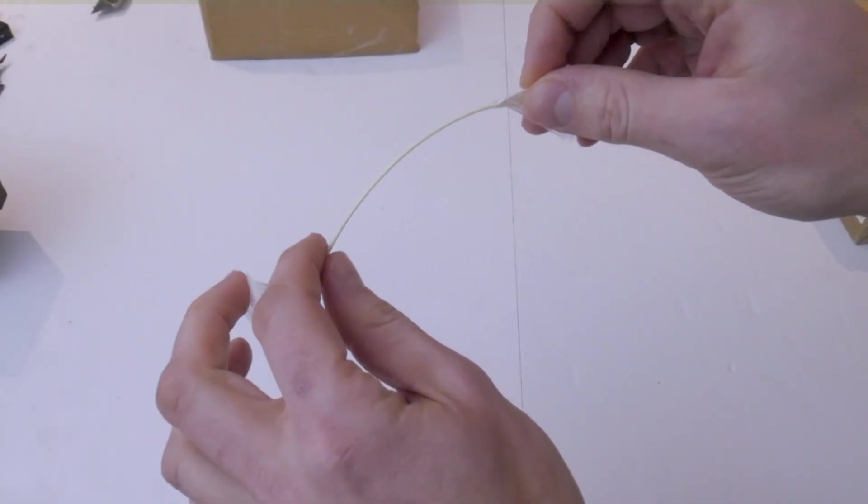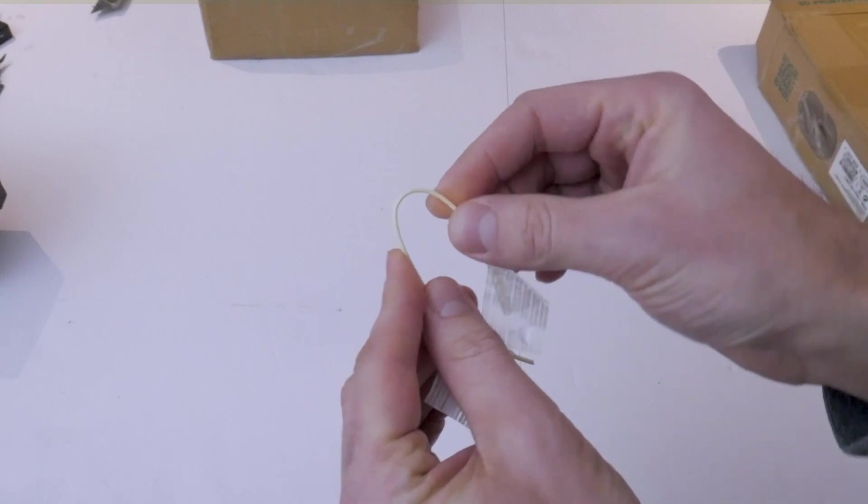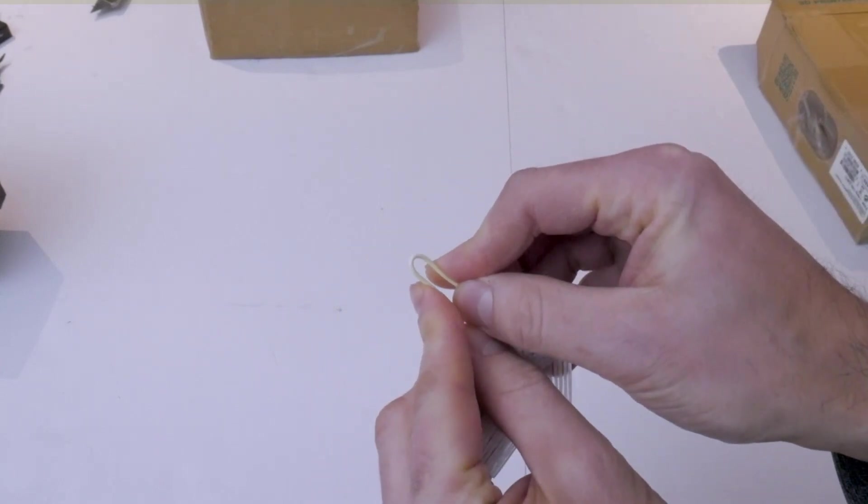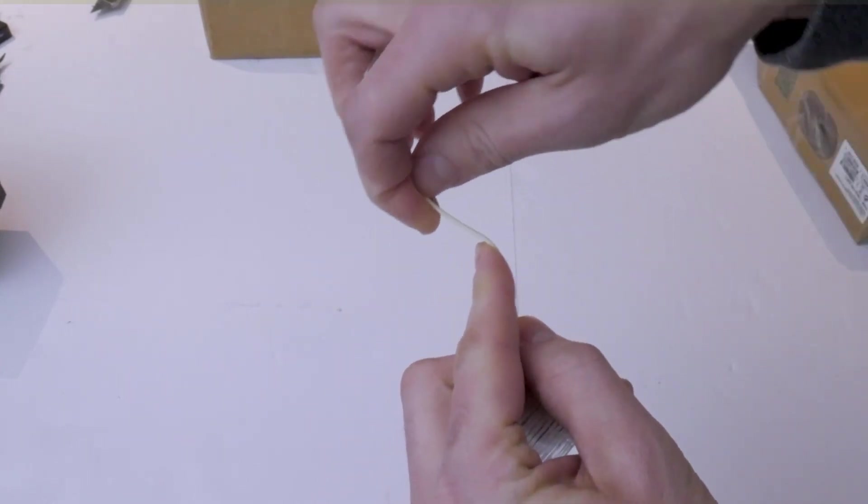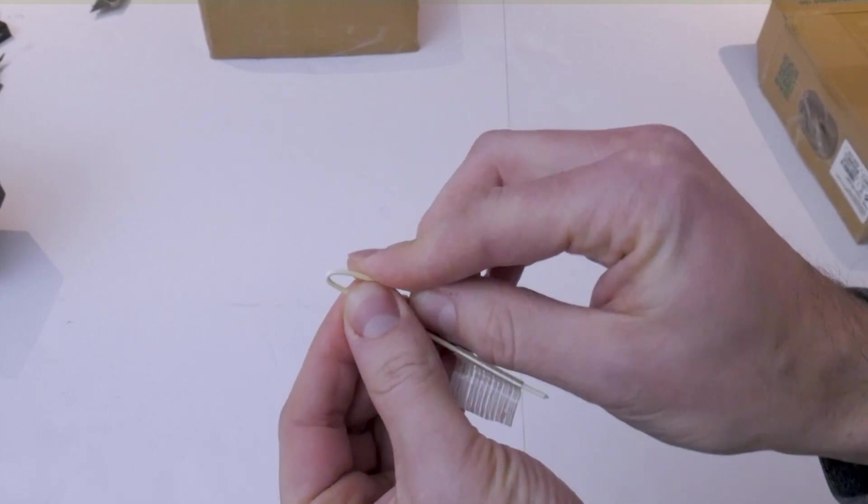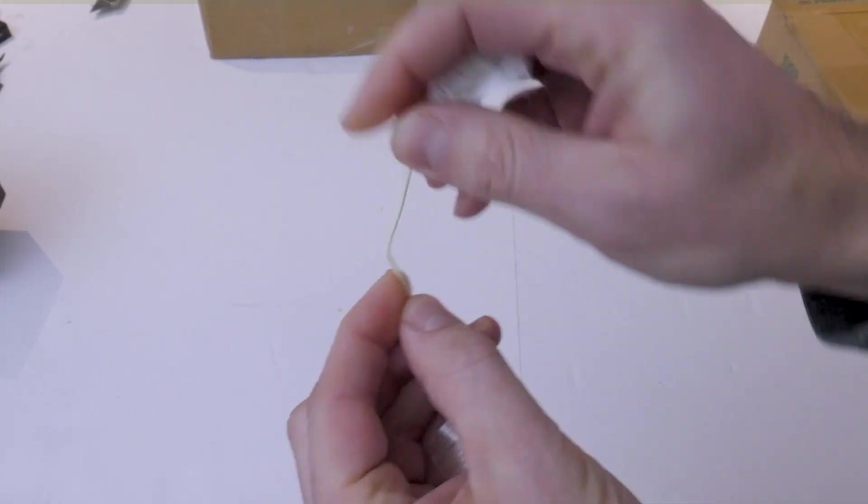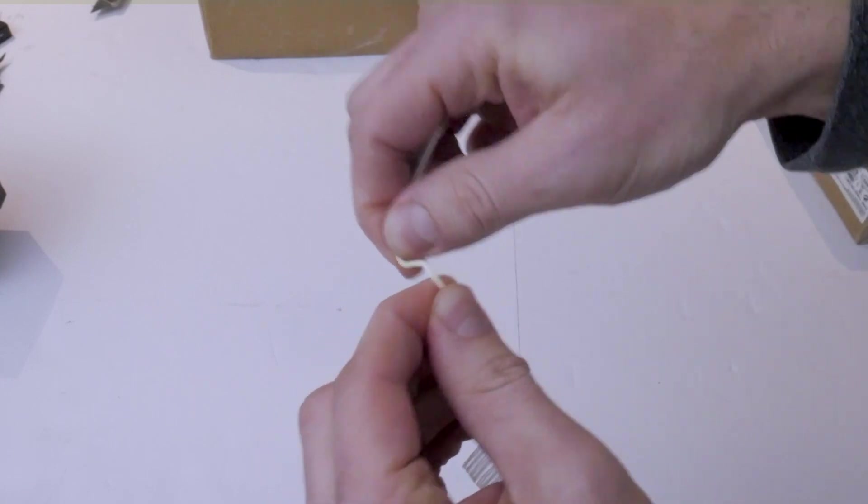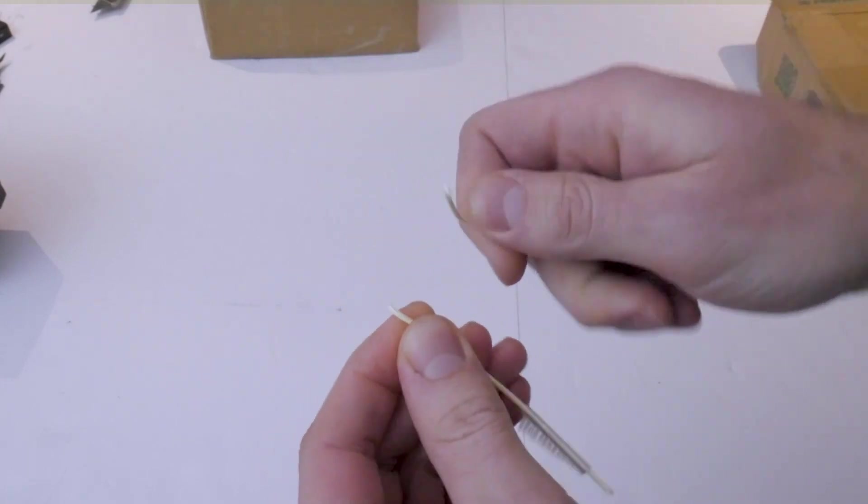One issue I've come across with other brands of matte PLA is that they tend to be brittle. eSun advertises that they do not have this issue with their filament. Taking the raw filament in my hand and bending it back and forth and twisting it around, it appears their advertising is true. It does not fracture easily.